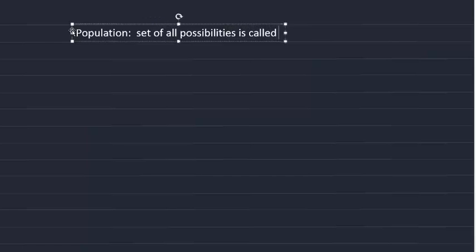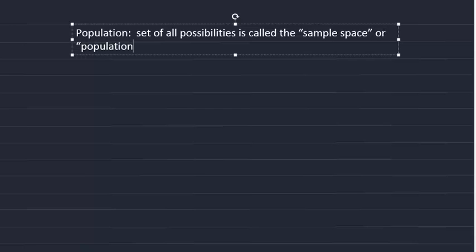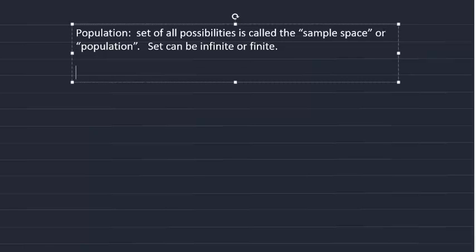Now we've been talking about various terms without really defining them, so I'd like to formally define them. First is population. In statistics, the set of all possible possibilities is called the sample space or population. That set can be infinite or finite, as we've discussed.